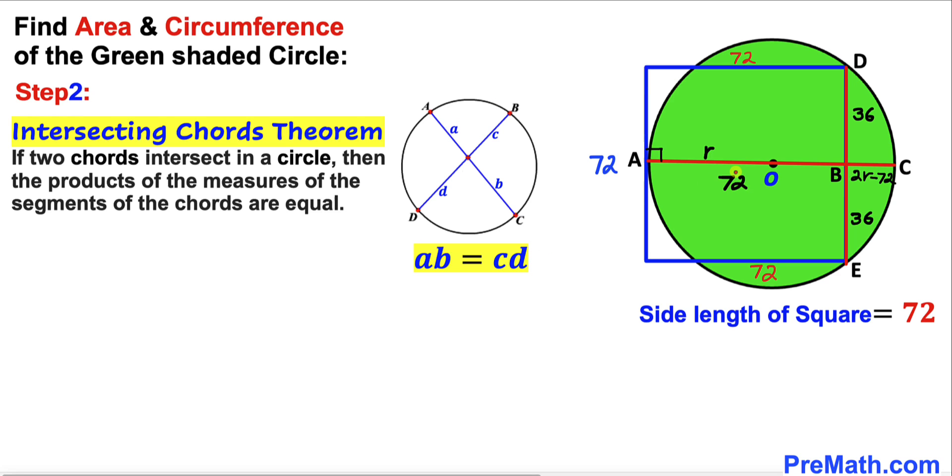Now we can see in our case our segments are 72 and this one is 2R minus 72. We are going to multiply them out. Likewise we got other segments 36 and 36, we are going to multiply them out as well. Therefore let me write down 72 times (2R minus 72) equal to 36 times 36.